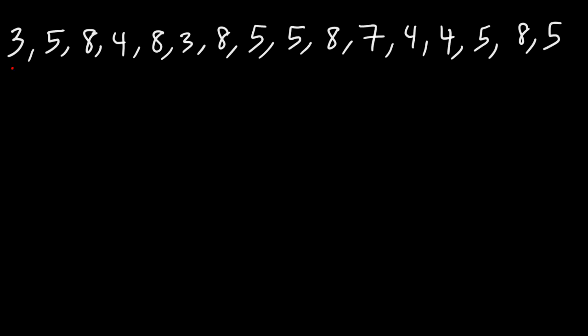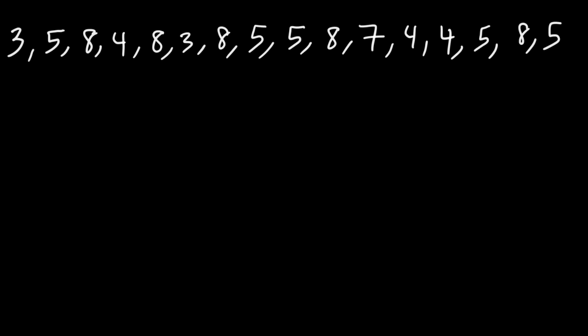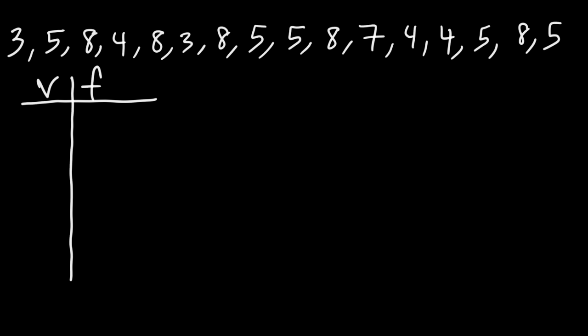How can we use the numbers in our data set to make a frequency table? We're going to talk about that in this video. Let's begin by making a two-column table. I'm going to write V for value and F for frequency. Let's start with the lowest value in our data set.